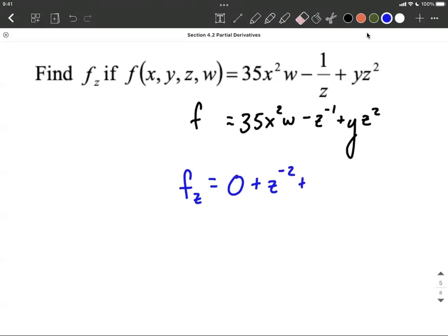Plus, moving on to that last term, again we have a z here. That constant, the y, can come along if we would like. But we can use the power rule on z squared. The exponent can come down in front, reduce the exponent by 1, we get z to the first power.